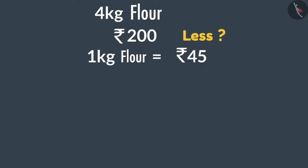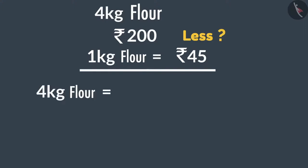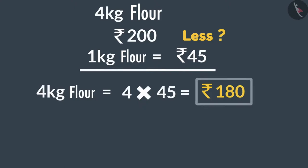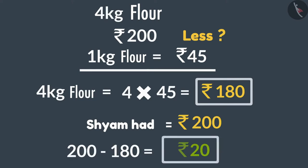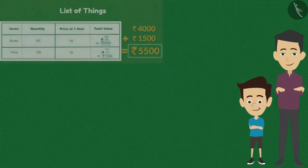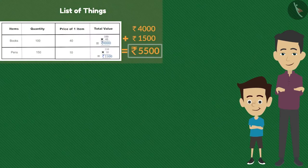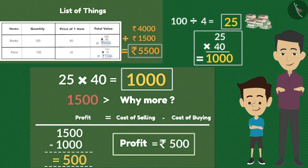If the cost of one kg of flour is 45 rupees, then the cost of four kgs would be 4 times 45, that is 180 rupees. That means Sham can easily buy four kgs of flour from the money given, and he will be left with 20 rupees. In this video we have learned about finding the total cost and finding the profit, along with Sham and Ramu. Thank you.